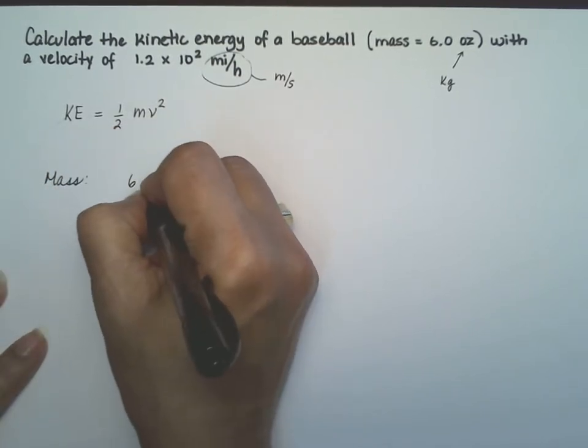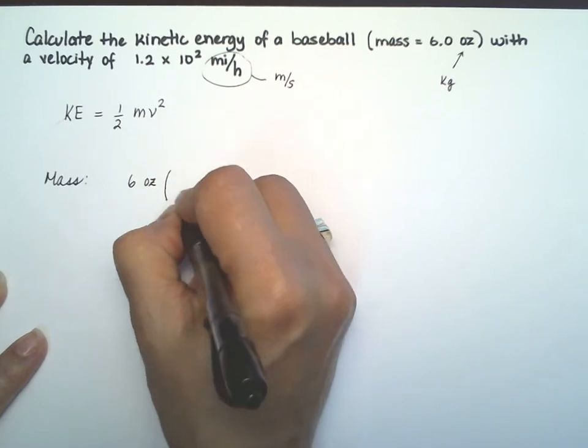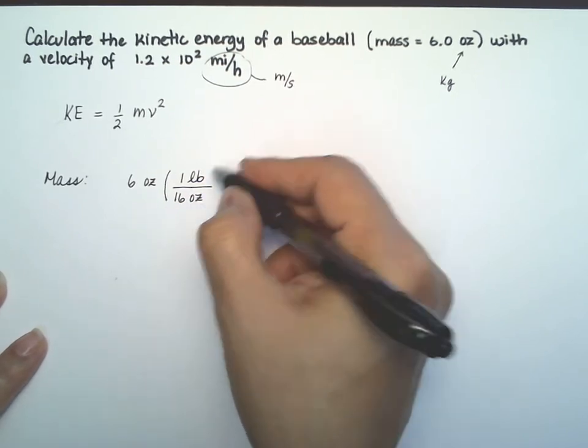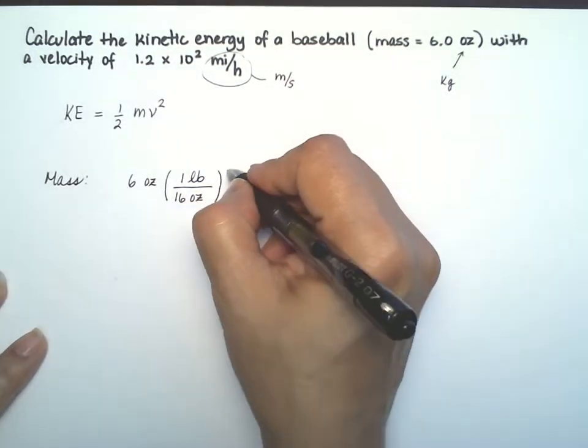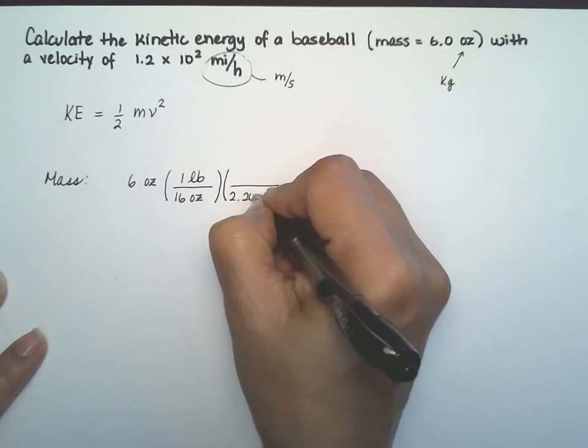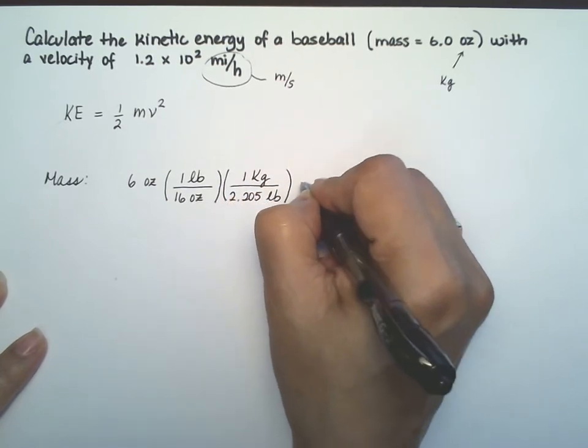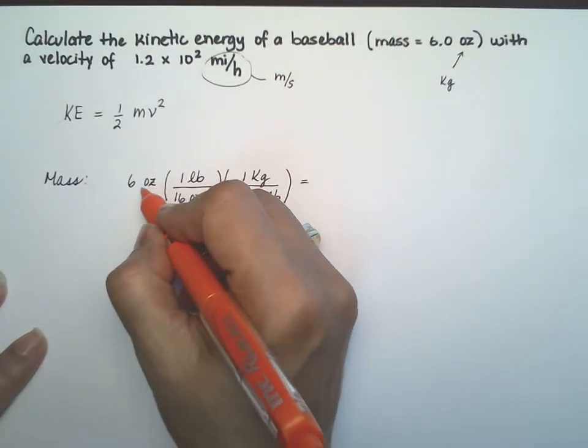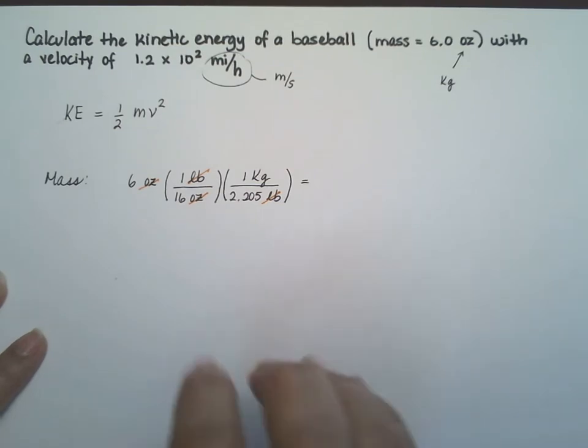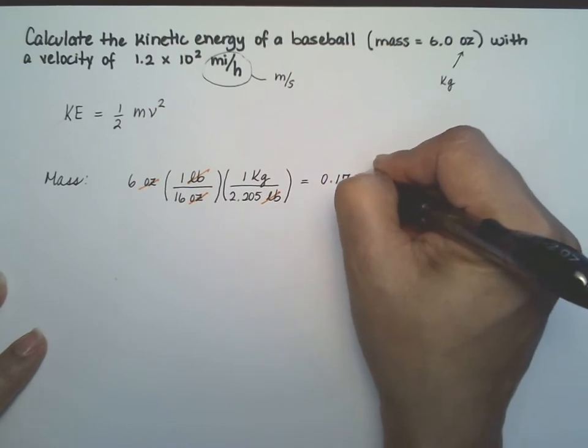So the mass, we start with 6 ounces, and then you go deep into your book to look at all the conversion factors, and we find that 1 pound is 16 ounces. If you're a cook, you know this. And then you also find that 2.205 pounds is a kilogram. All right, let's see if we cancel ounces. We cancel the ounces. We cancel the pounds. That means that we set it up correctly. And that means that our 6-ounce ball is actually 0.17 kilograms.